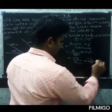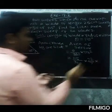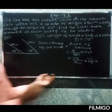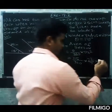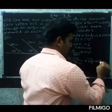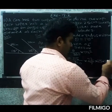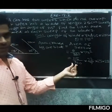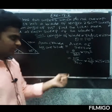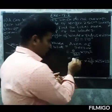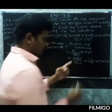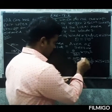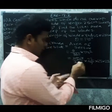So the theta value is 115, divided by 360, into pi, and we use the value 22 by 7, into radius squared, which is 25 into 25.